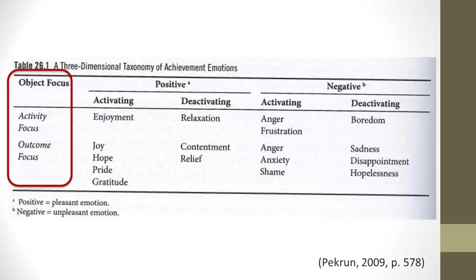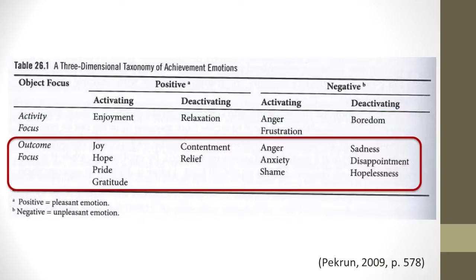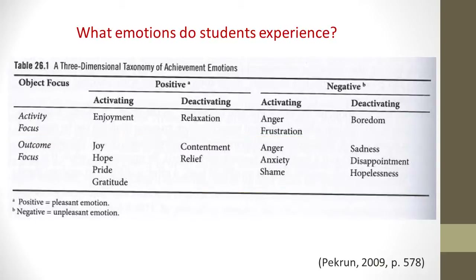This table also shows two different foci: activity and outcome. The activity focus refers to achievement activities experienced during instruction — students might feel enjoyment, relaxation, anger, frustration, or boredom. The outcome focus refers to emotions experienced after an outcome; after receiving the result of a test, students might feel joy, contentment, anger, or sadness. In academic settings, students experience a wide range of emotions — almost all of the major human emotions. Anxiety is the emotion studied most and reported most frequently, and interestingly, students report about the same amount of positive emotions as negative emotions.